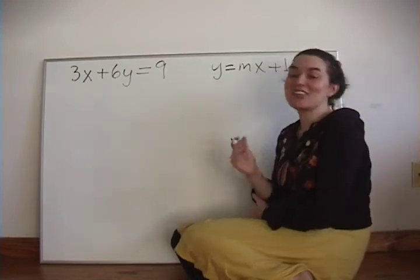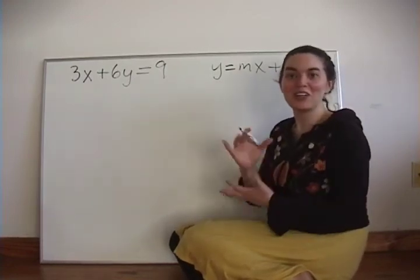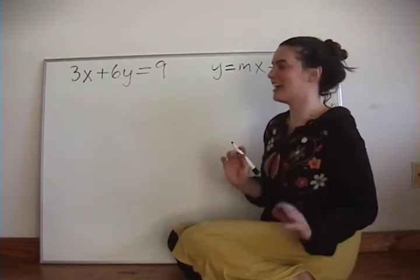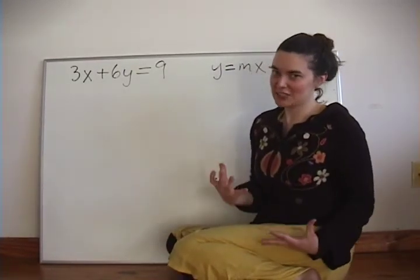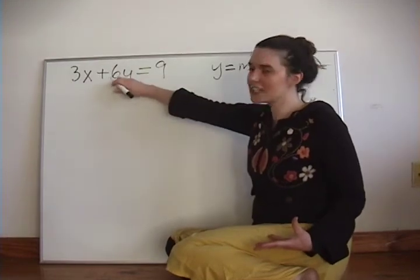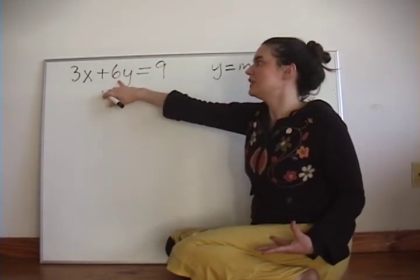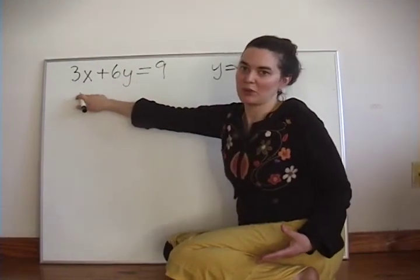We want to get the y by itself. We have to rearrange in order to make that happen. Before we can get y by itself, we need to get 6y by itself. To get 6y by itself, we need to subtract 3x from both sides.